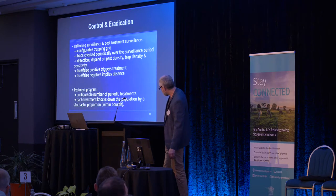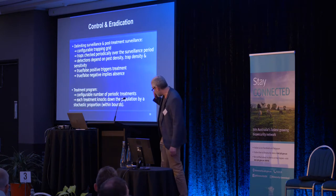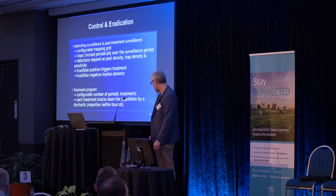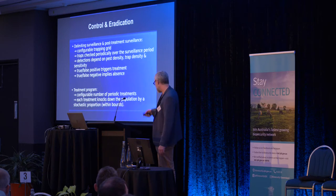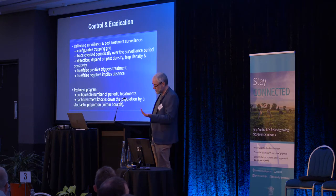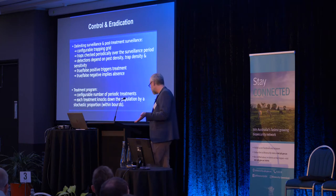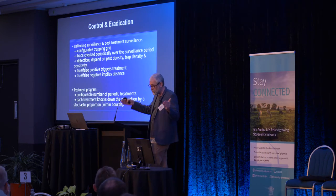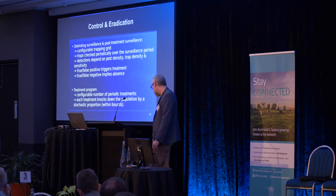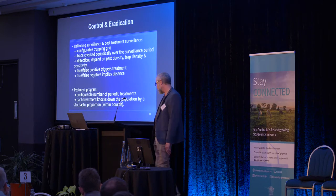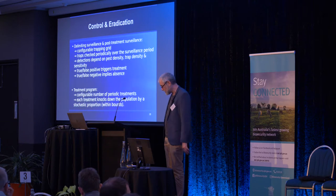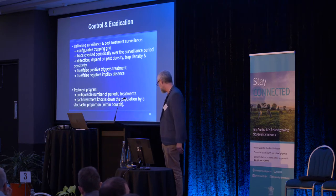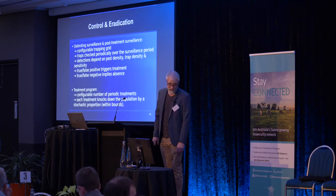The trapping grid can be the current fruit fly trapping grid or an experimental one we want to test. A true or false positive triggers a control process; a true or false negative means we assume the pest is absent. For deliberating surveillance, we can experiment with things such as trap spacing, cost of traps, and sensitivity. The treatment program is user-configured with a set number of treatments at a certain interval over a treatment period, and each treatment will reduce the population stochastically.